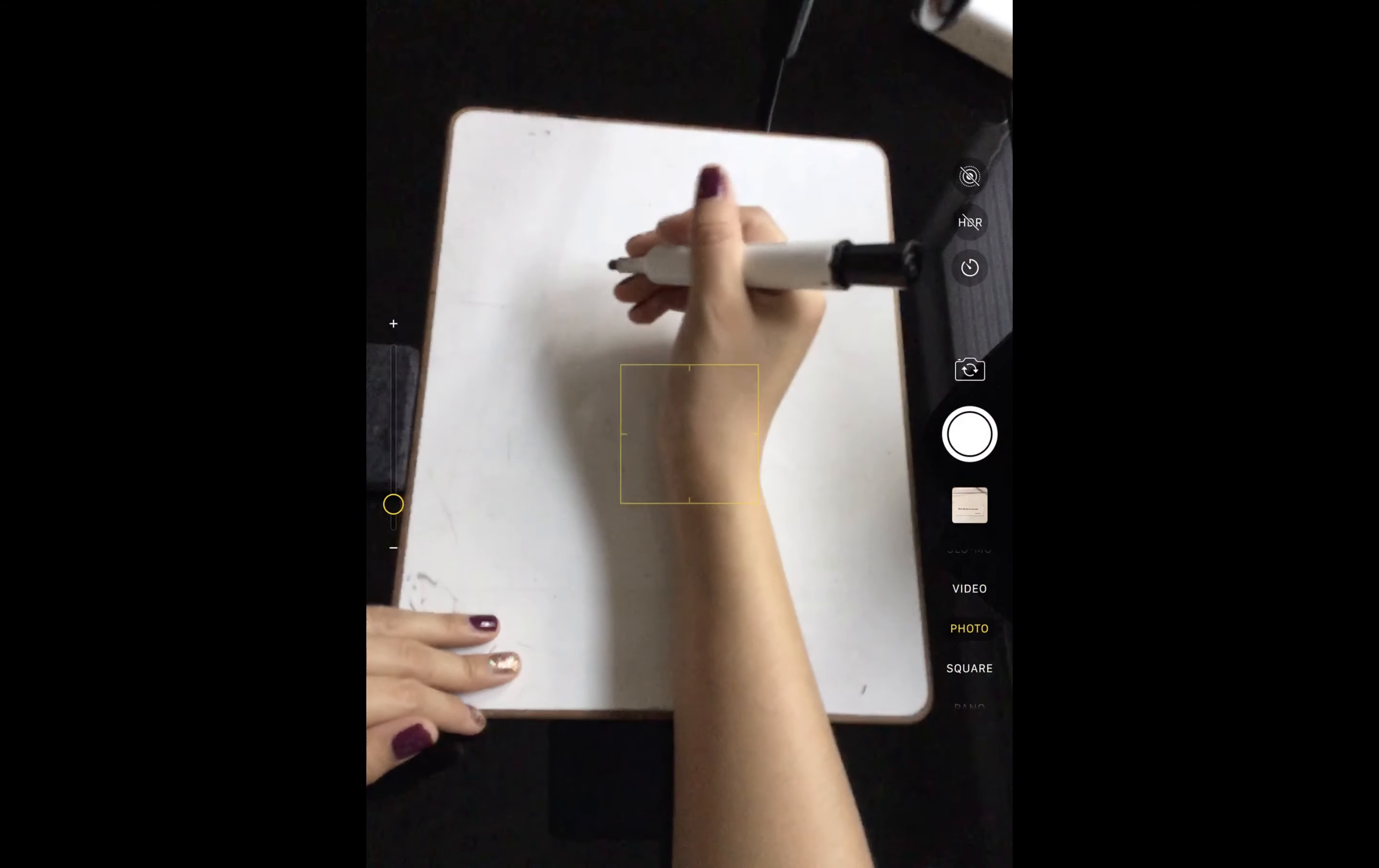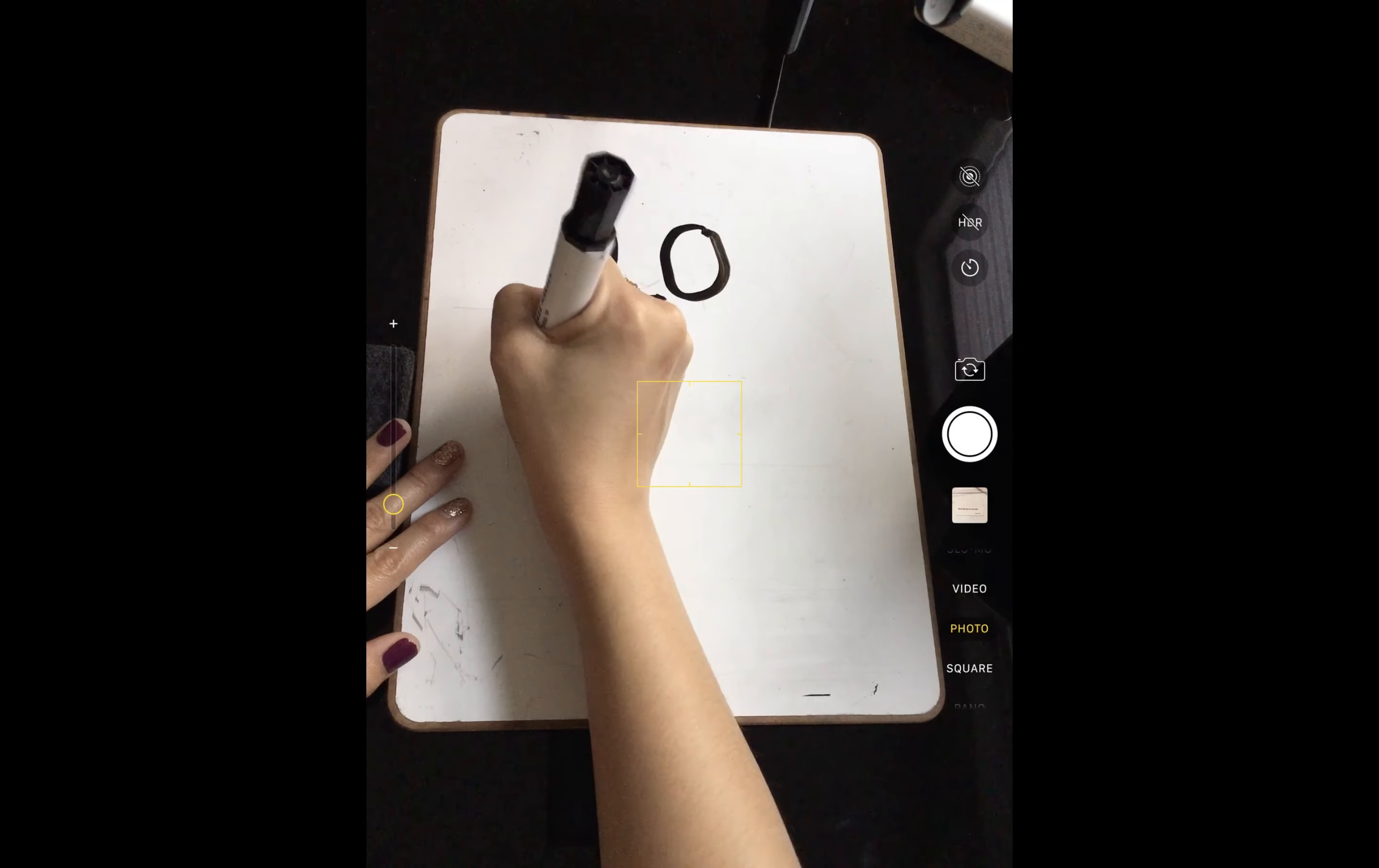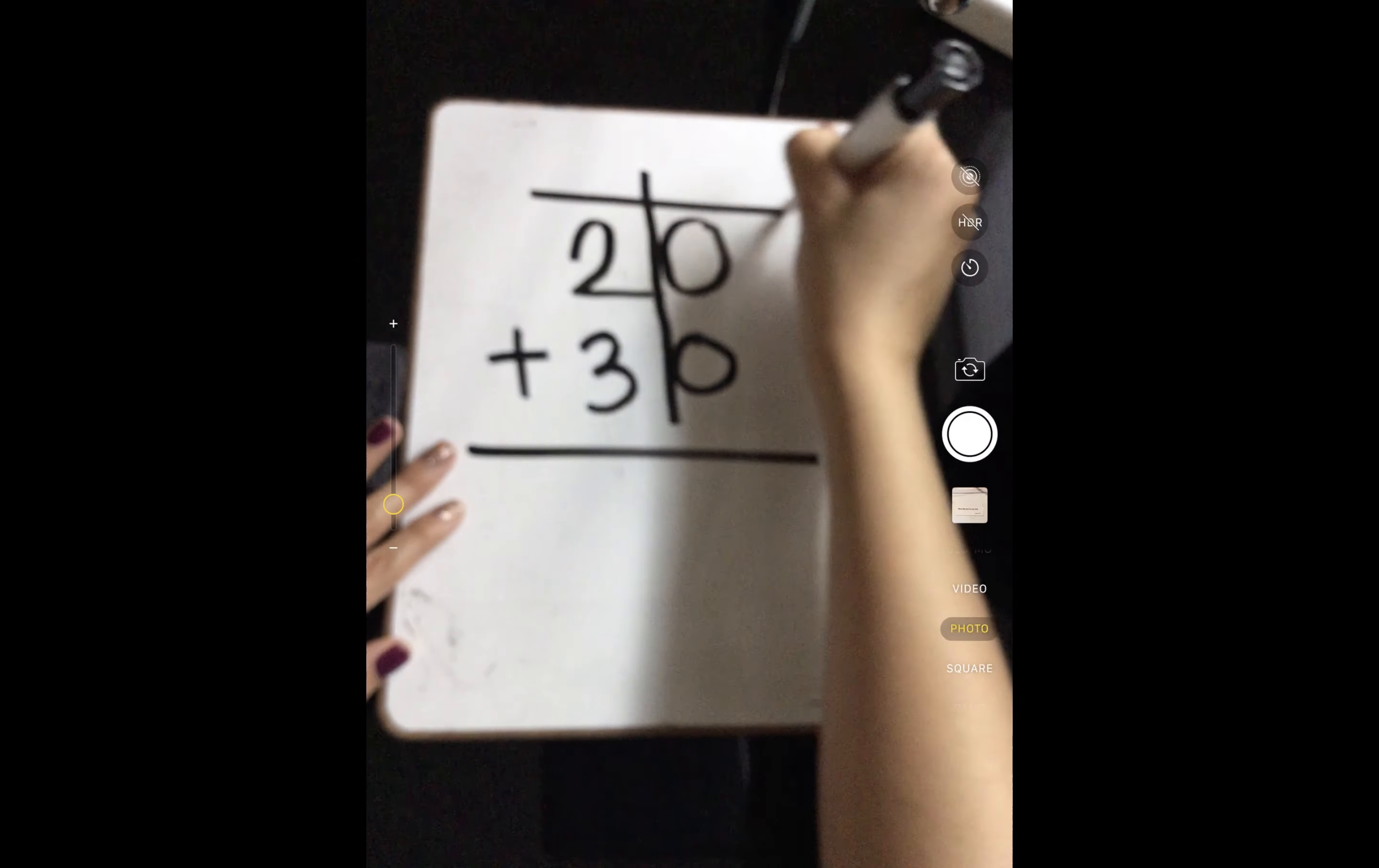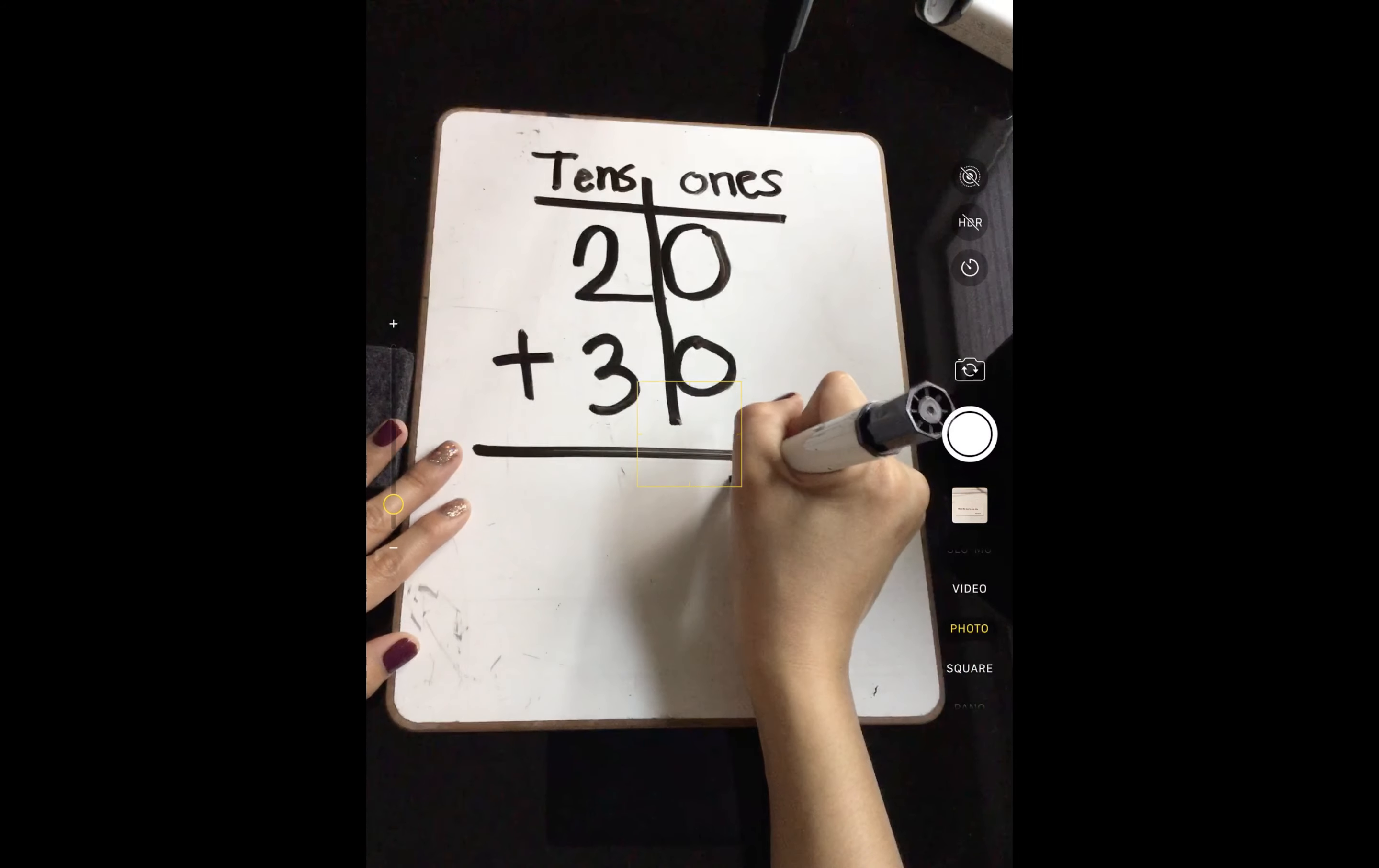So what we're going to be doing here is we're first going to do an addition, simple problem with no carrying over anything. So if you can write 20 plus 30. So we're going up and down. Remember, boys and girls, if I were to make a T here, this would be my ones, and these are my tens. So first things first, I always add my ones first. So 0 plus 0 we know is 0.